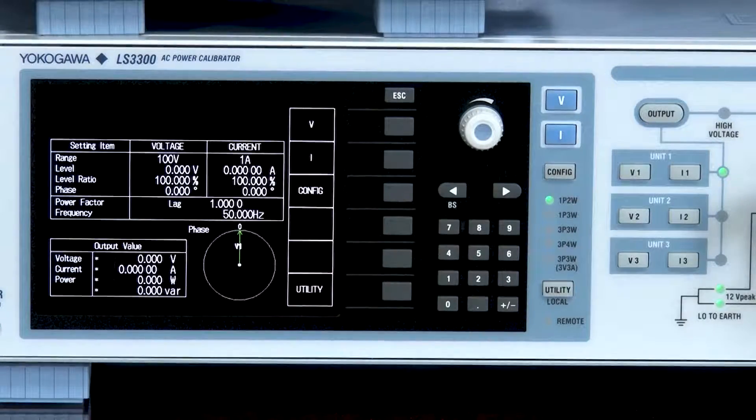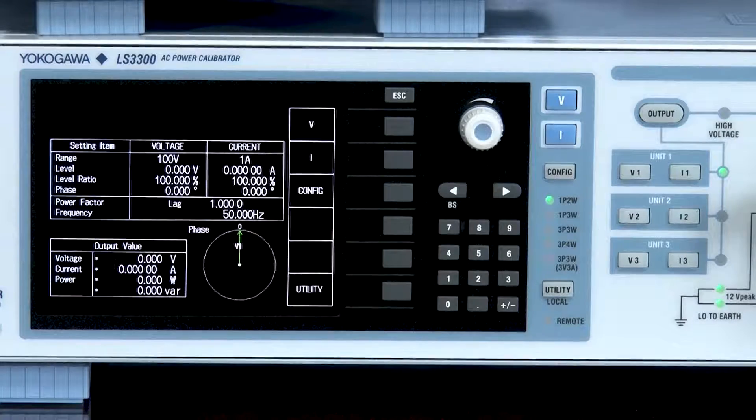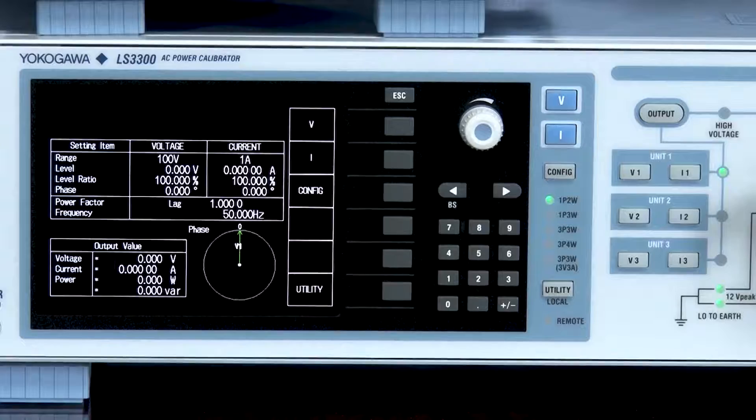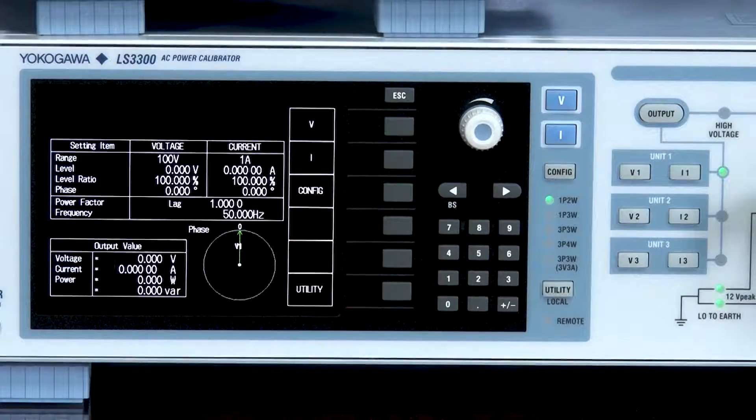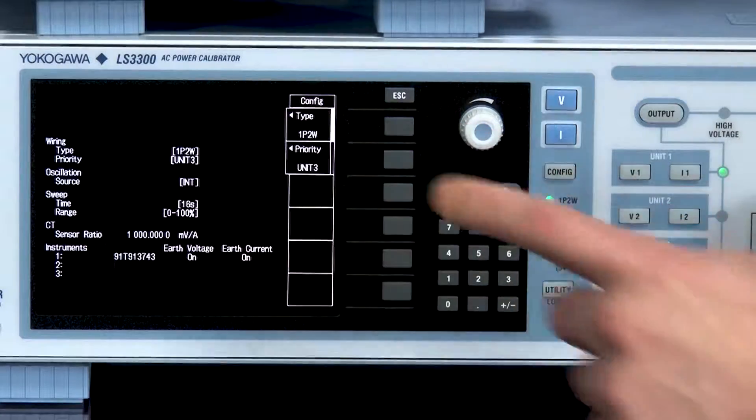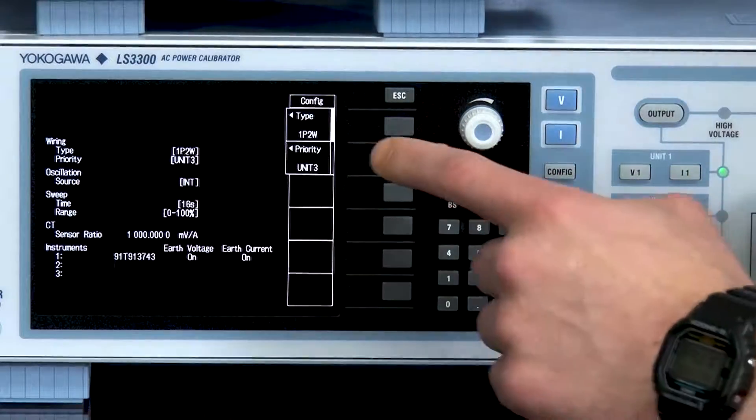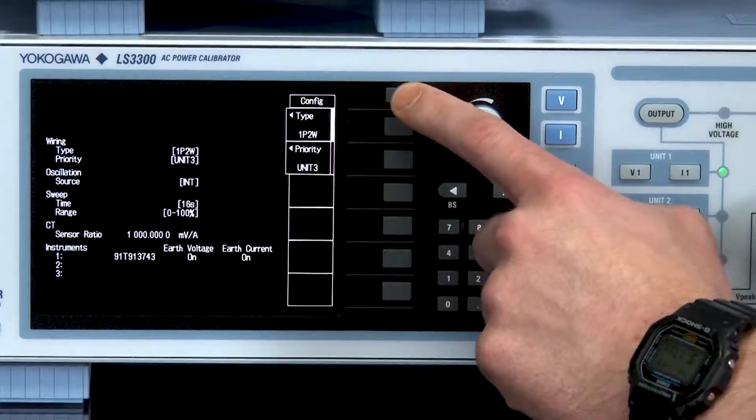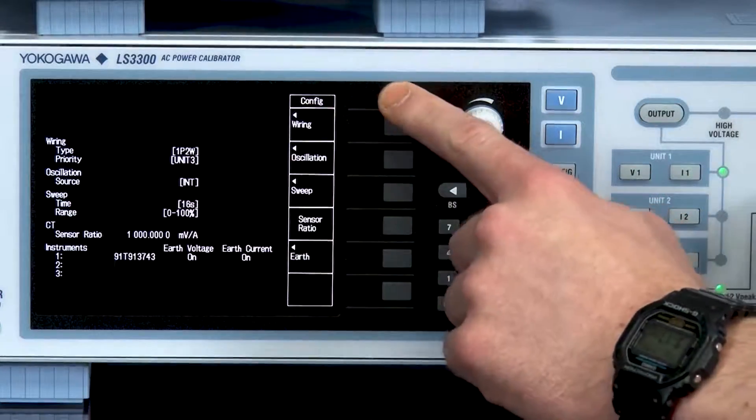The first thing I will show you is how to set up the wiring configuration for one phase two wire in the LS3300 configuration settings. First I will press the configuration key, then I will select wiring next to the type, and finally I'll select one phase two wire. We can exit out of that screen and then exit one more time.